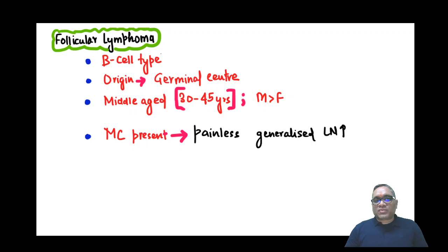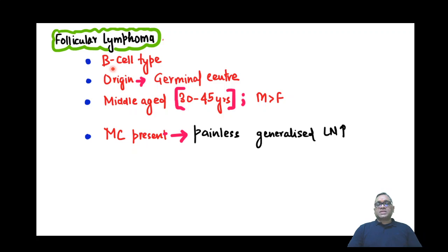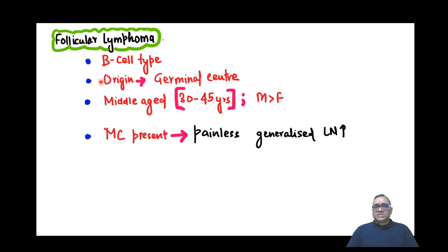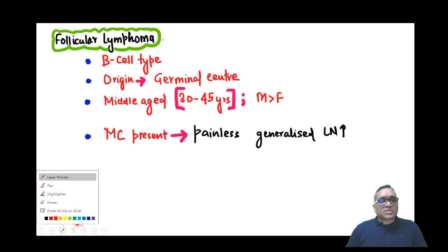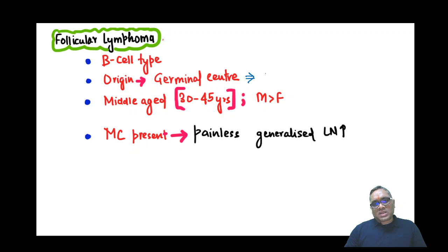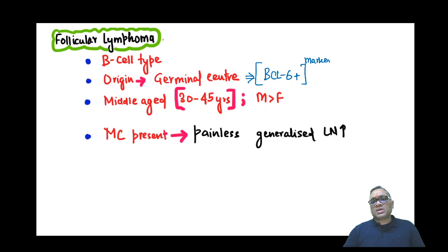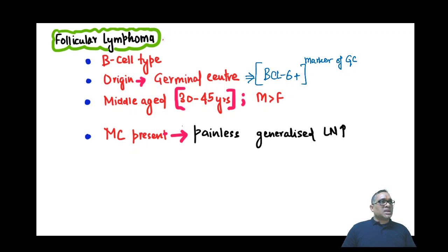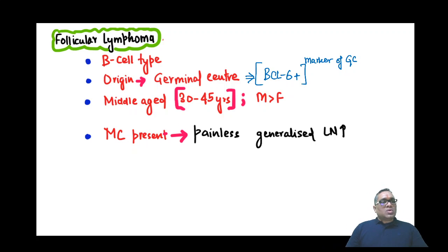Follicular lymphoma is a B-cell type of lymphoma. They originate from the germinal center of the lymph node. Because they originate from the germinal center, they will also be BCL6 positive. BCL6 is a marker of the germinal center, so follicular lymphoma arising from the germinal center will be BCL6 positive.